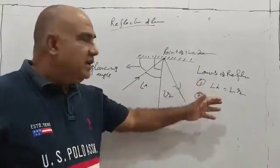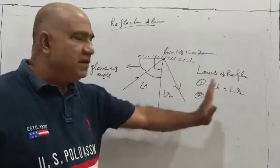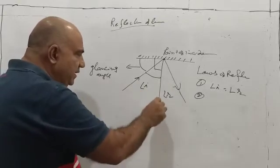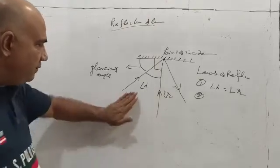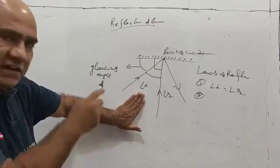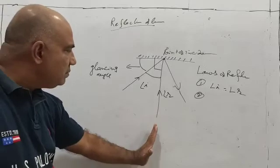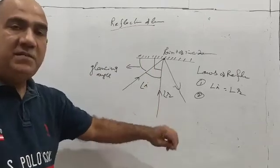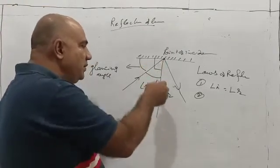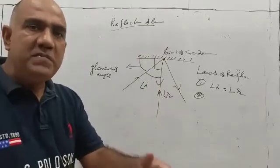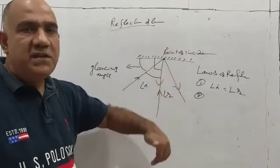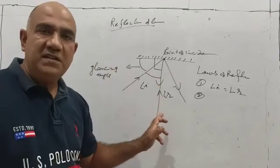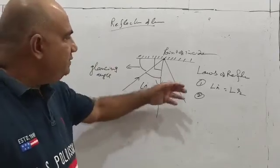So the normal, incident ray, and reflected ray all lie in the same plane, and the angle of incidence is always equal to the angle of reflection. If we bring the incident ray closer and closer to the normal, the angle decreases. When the incident ray coincides with the normal, the angle of incidence is zero, and therefore the angle of reflection is also zero. That means a ray incident along the normal will be reflected back along the same path. The glancing angle in this case would be 90 degrees. Having defined these terms, the rest we will see in the next class.